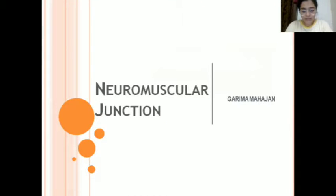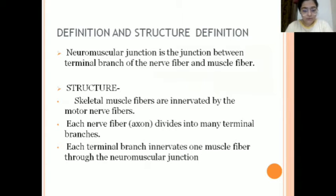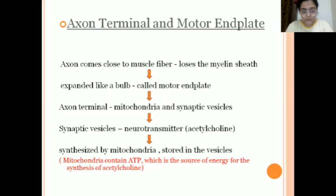Hello everyone, it's Garima Mahajan and the topic we are going to see today is Neuromuscular Junction. The name defines itself — neuro means nerve fibers and muscular is for muscle fibers. The junction between these two nerve fibers and muscle fibers is the neuromuscular junction. Here, the muscle fibers are innervated by nerve fibers. Each nerve fiber has an axon which is divided into terminals, and these terminal branches innervate the muscle fiber. This whole unit is called the neuromuscular junction.